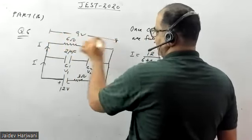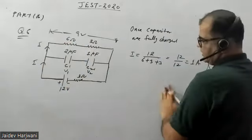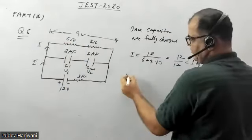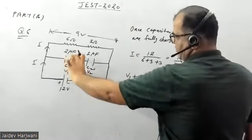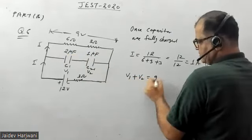The same voltage is getting dropped across these capacitors. Now I can write v1 is voltage across c1 and v2 is voltage across c2, and they equal 9 volts.